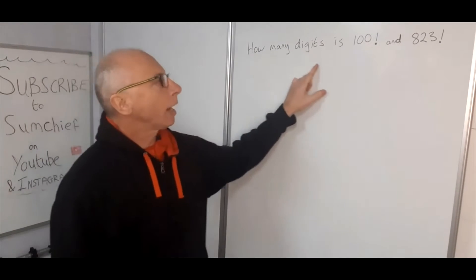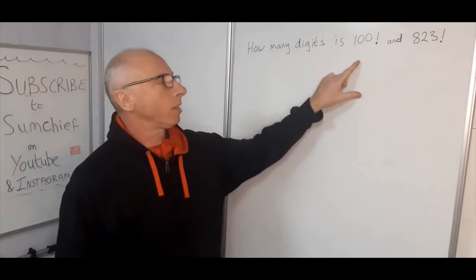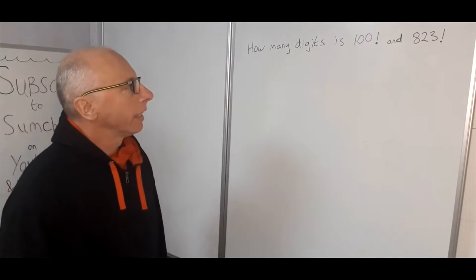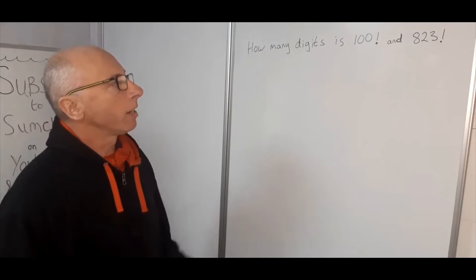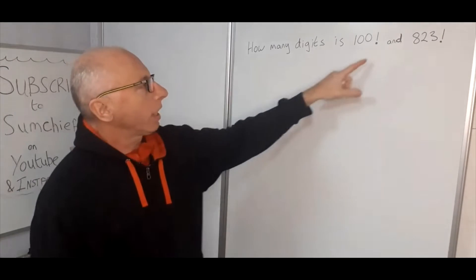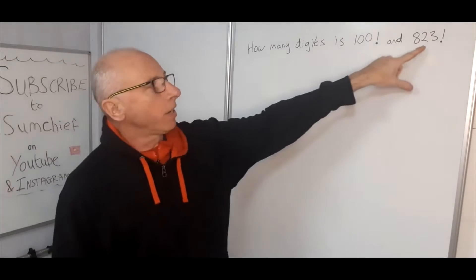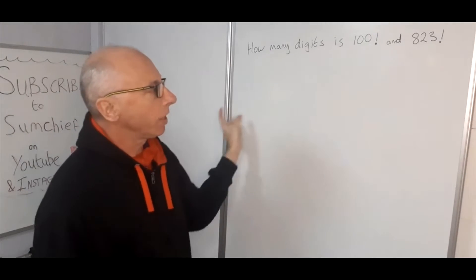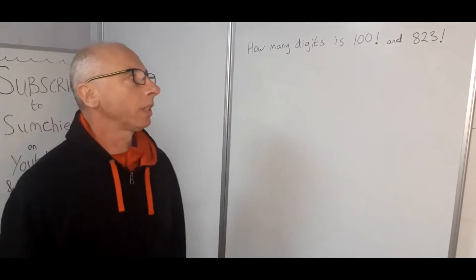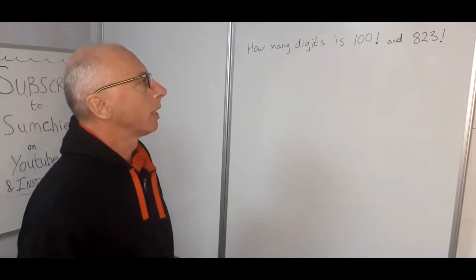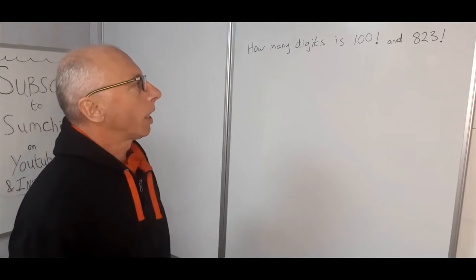The question is: how many digits are in 100 factorial and 823 factorial? We know these are going to be really big numbers — in the case of 823 factorial, probably not even going to fit on the board in readable writing. So how are we going to go about finding the number of digits?